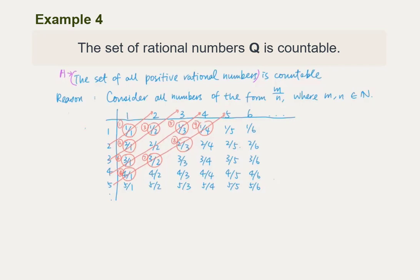Then we shall hit every number using the diagonal counting scheme. For example, the first number we hit is 1/1, the second is 2/1, the third is 1/2, the fourth is 3/1. We can omit 2/2 because it has the same value as 1/1, and we proceed to the fifth, sixth, and so on. We manage to hit every number and assign each a natural number representing the order of the term in the infinite sequence. Therefore, the set of positive rational numbers is countable.